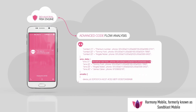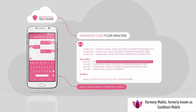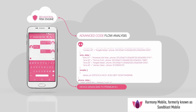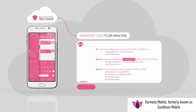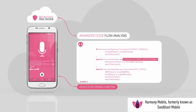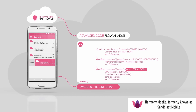For example, advanced code flow analysis exposes whether hard-coded phone numbers are used to contact premium SMS services, or if the code is using the device microphone to record sound and sending files to nefarious external servers.